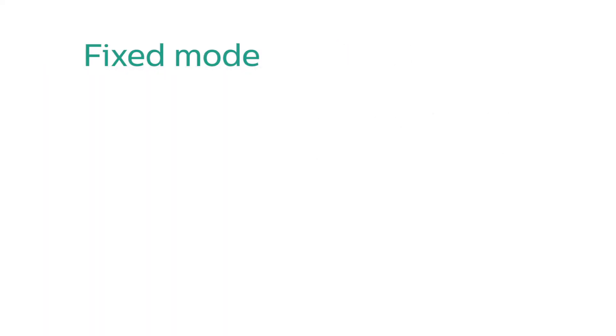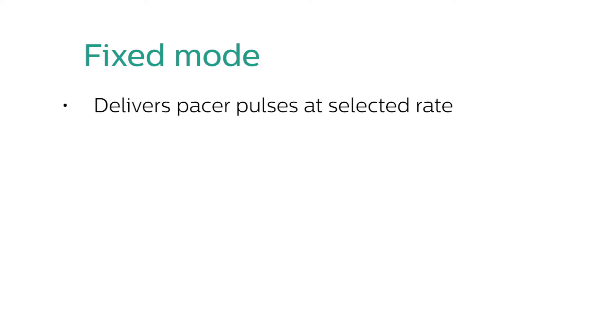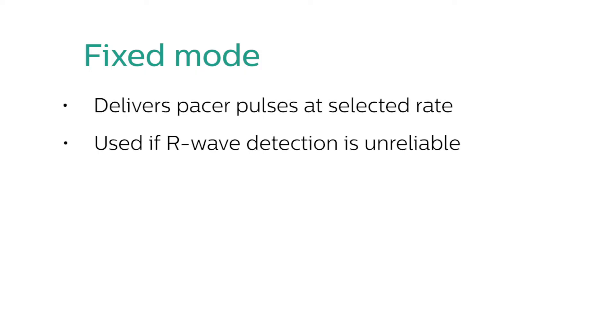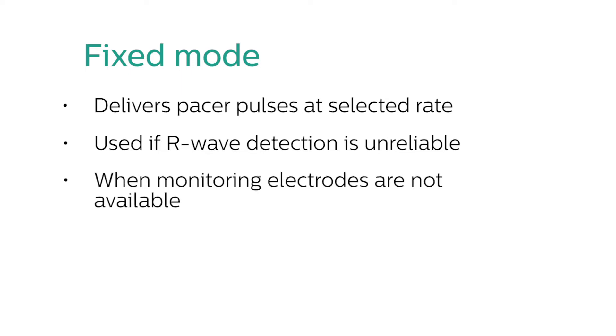Fixed mode pacing delivers asynchronous paced pulses at the selected pacer rate and is typically used if R-wave detection is unreliable or when monitoring electrodes are not available.